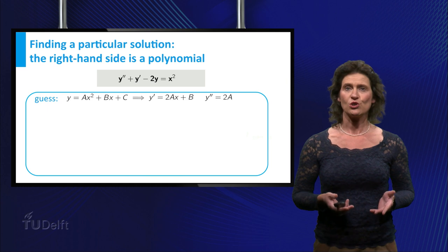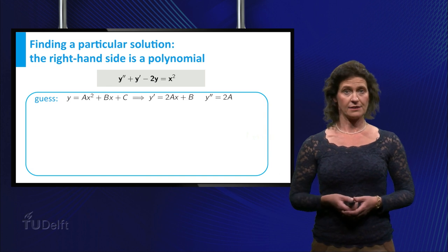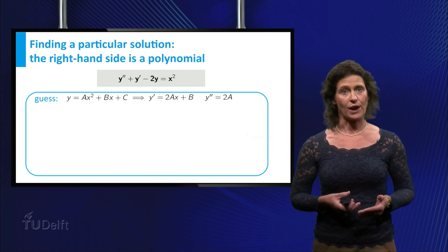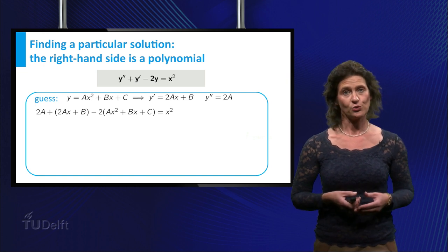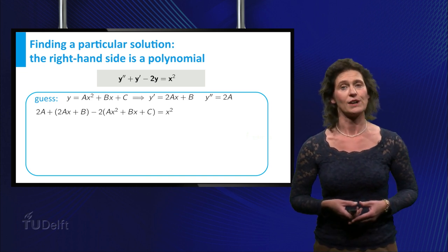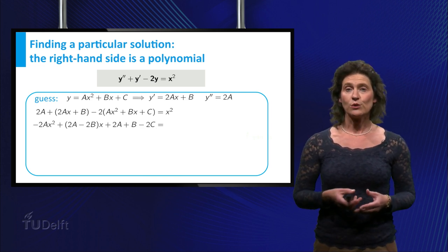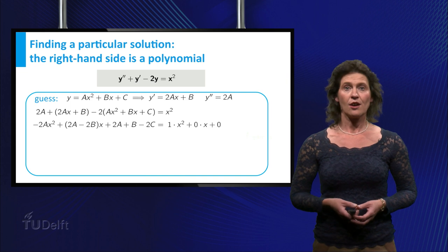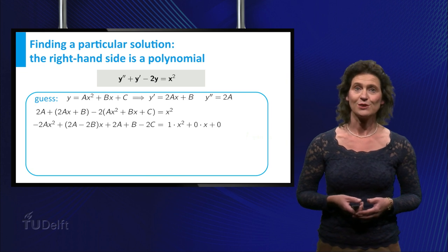If this function were a solution of our differential equation, it should satisfy the equation in the gray box on the slide. Plugging in the expressions for y double prime, y prime and y, we find that 2 times a plus 2 times a times x plus b minus 2 times a x squared plus b x plus c equals x squared. Rearranging the left-hand side gives minus 2a times x squared plus 2a minus 2b times x plus 2a plus b minus 2c.